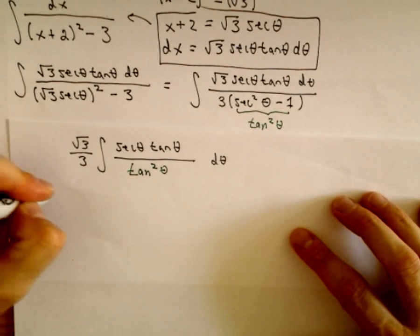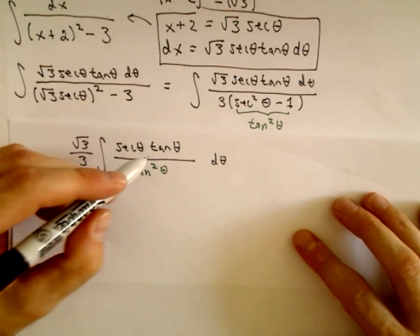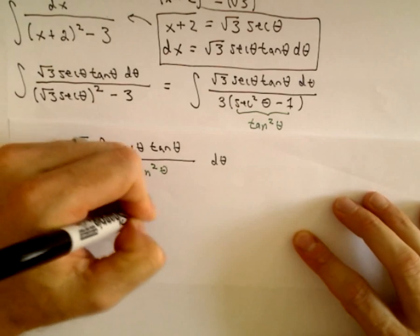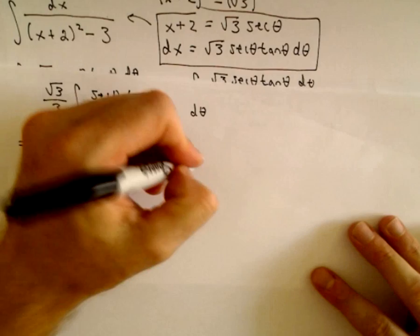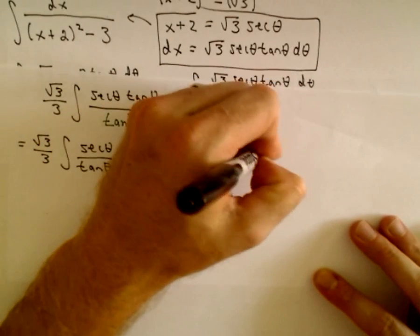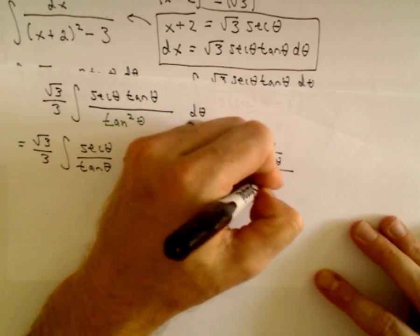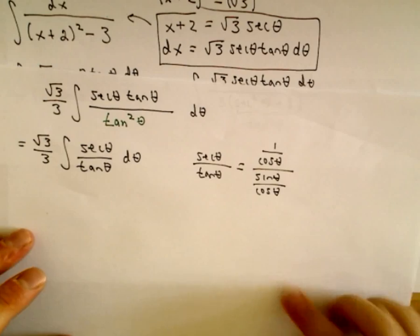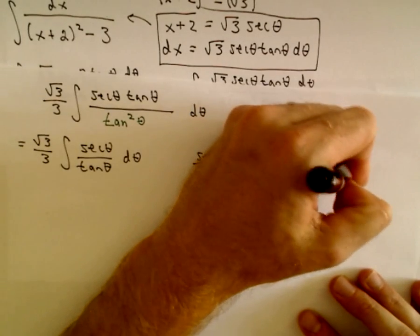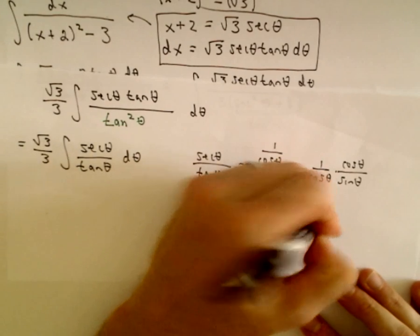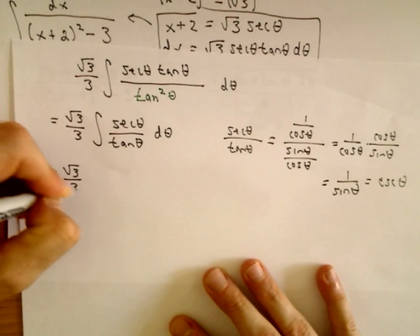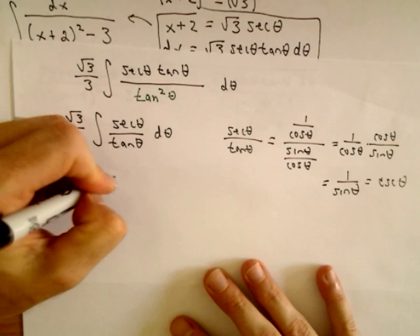Now we can keep simplifying. Pulling out the constant square root of 3 over 3, we have secant theta times tangent theta in the numerator and tangent squared theta in the denominator, leaving us with secant theta over tangent theta. Writing these out: secant theta is 1 over cosine theta, and tangent theta is sine theta over cosine theta. Flipping and multiplying gives 1 over sine theta, which is just cosecant theta.